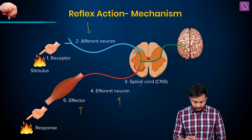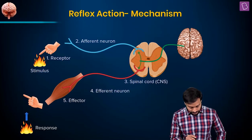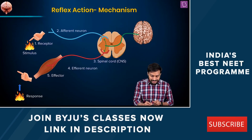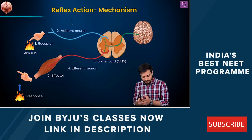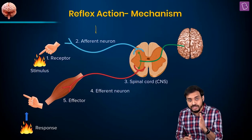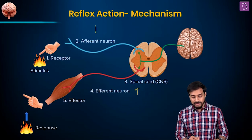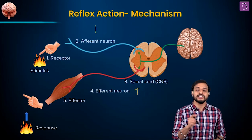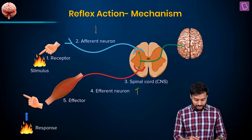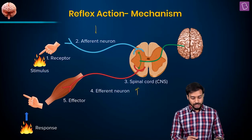The response then happens. So these are the components involved: the stimulus is received by the receptor, the signal is transmitted by the afferent neuron to the central nervous system, it is processed there, and the action is suggested as a signal transmitted by the efferent neuron to the effector organ. The effector muscle will contract or relax — whatever is necessary — resulting in the movement of your hand. This is the reflex action mechanism.